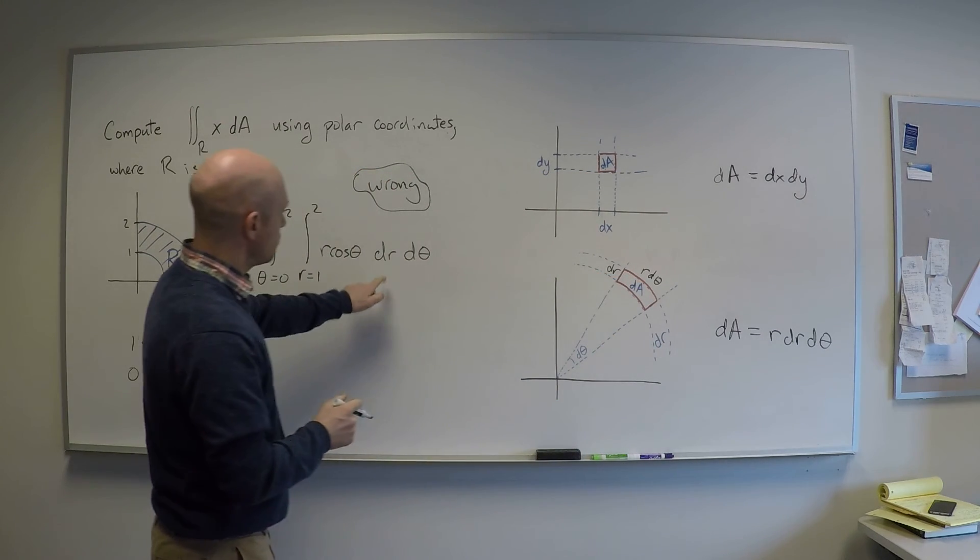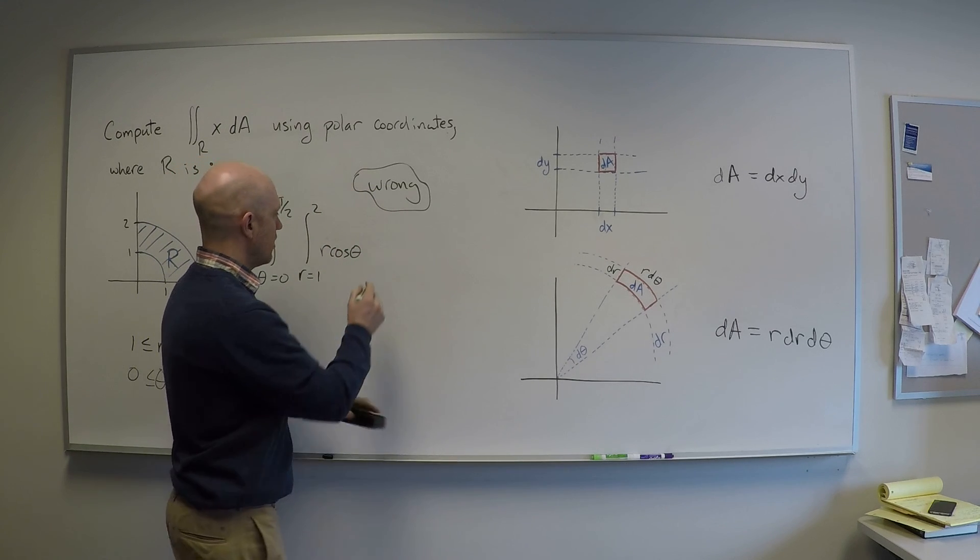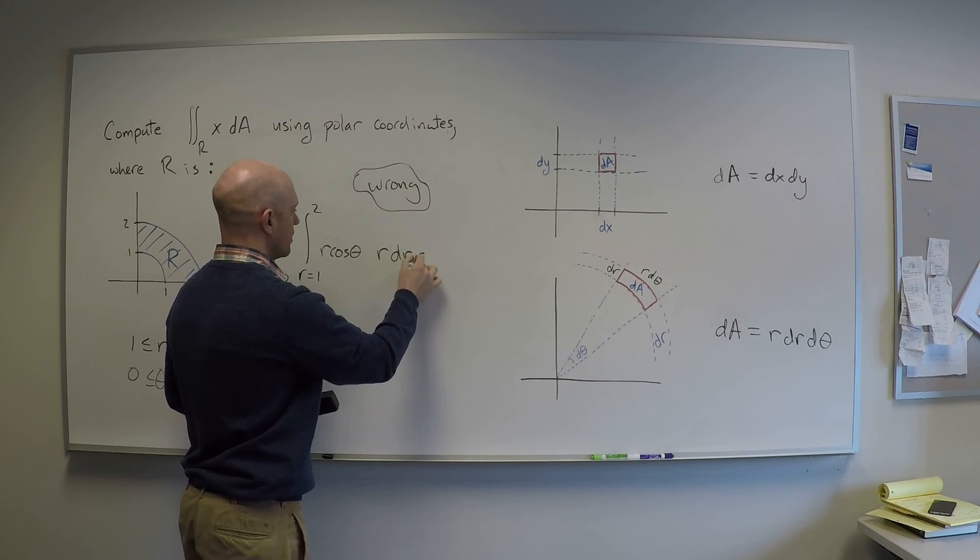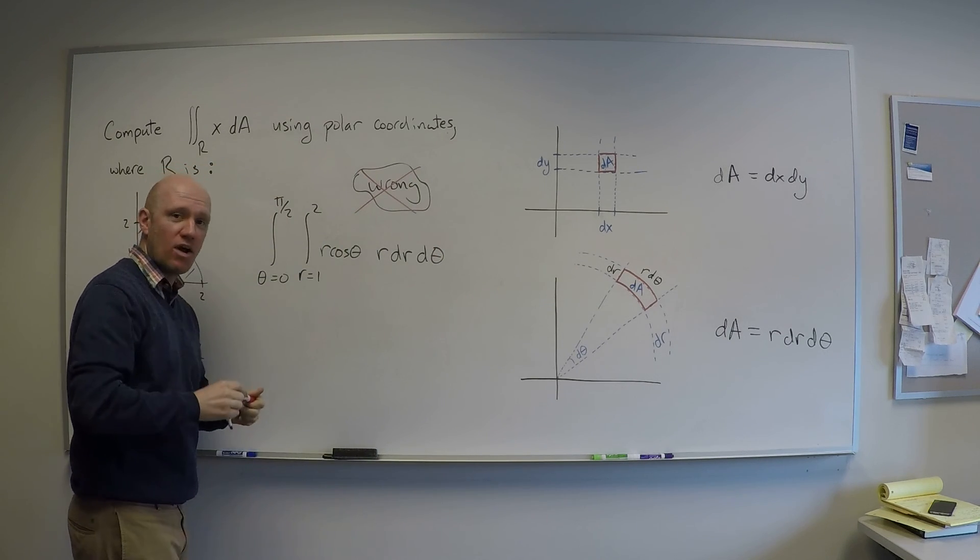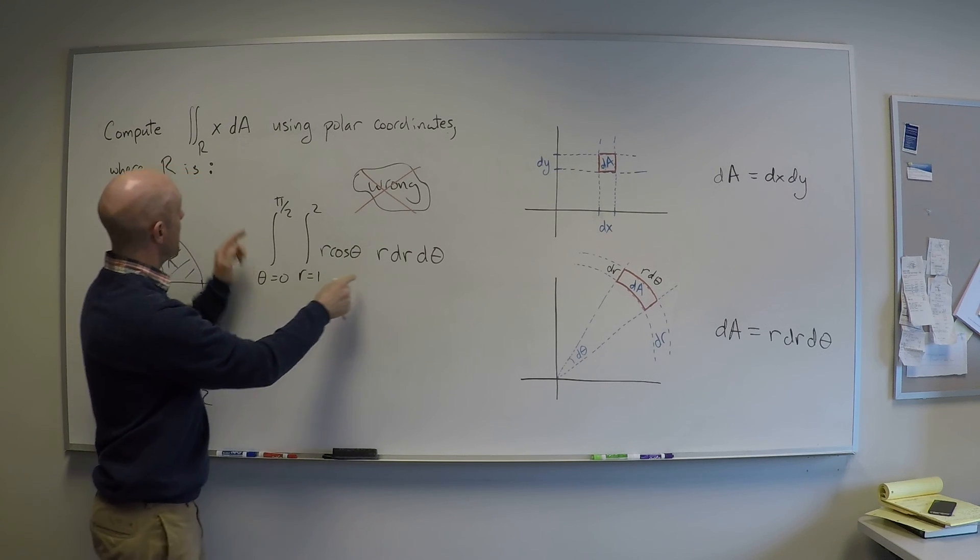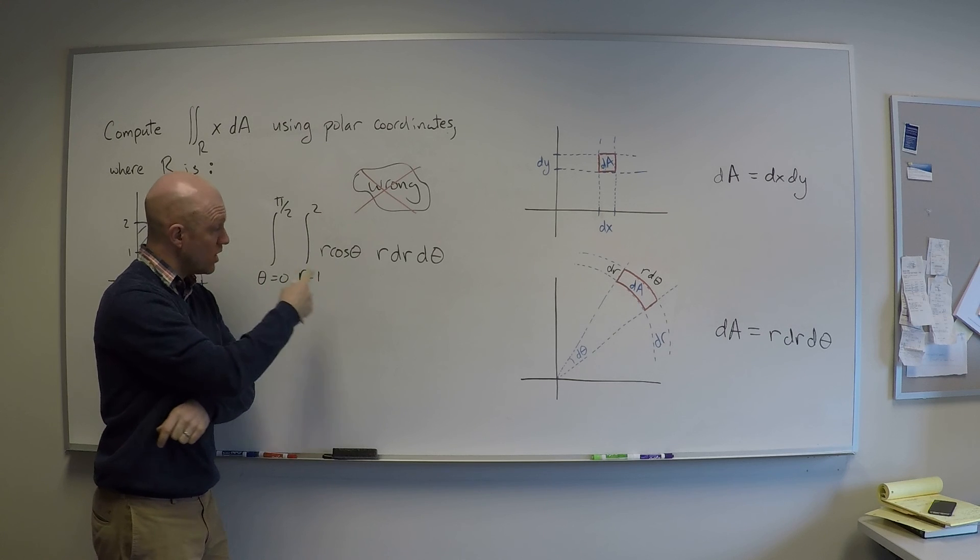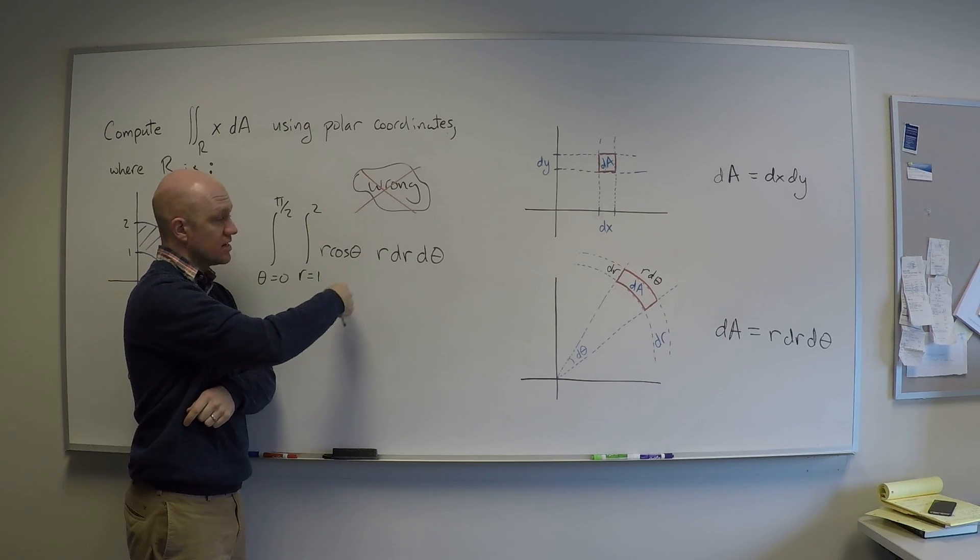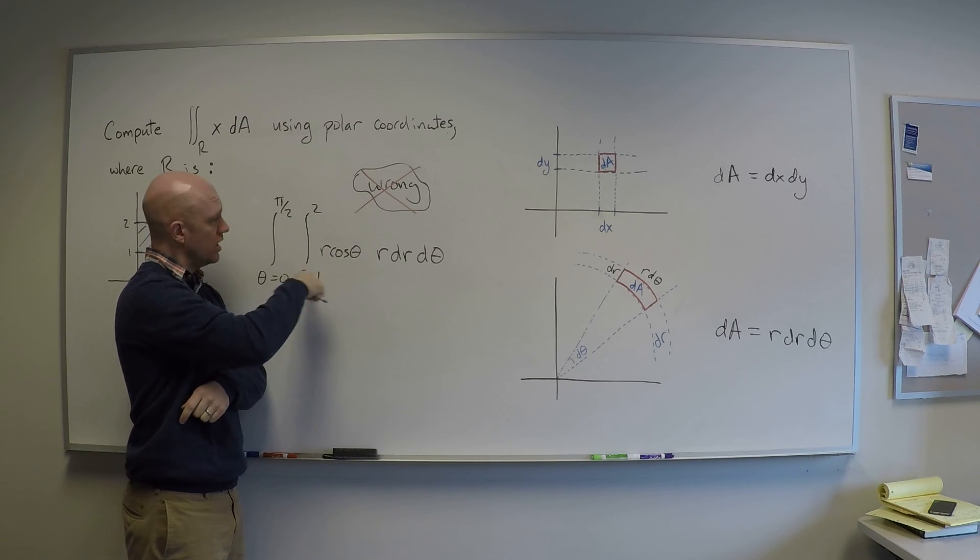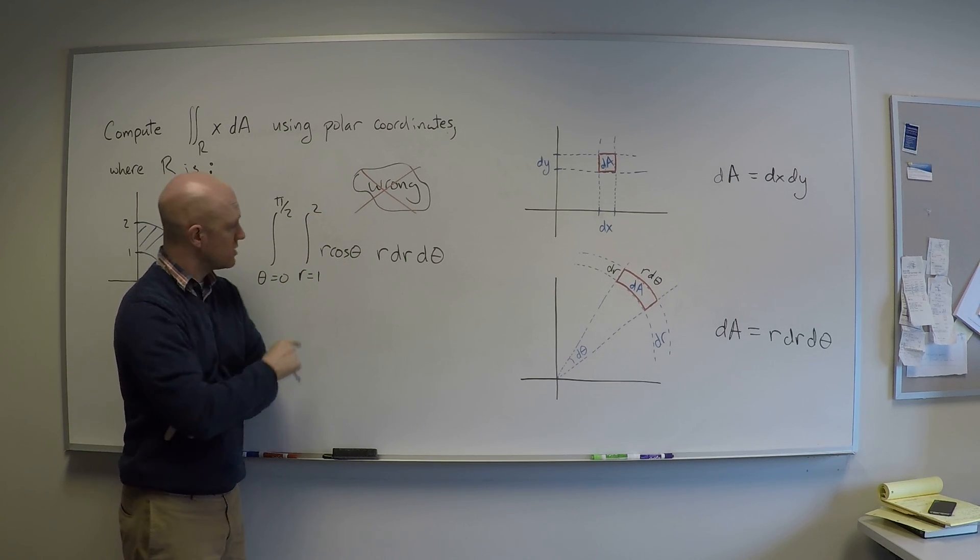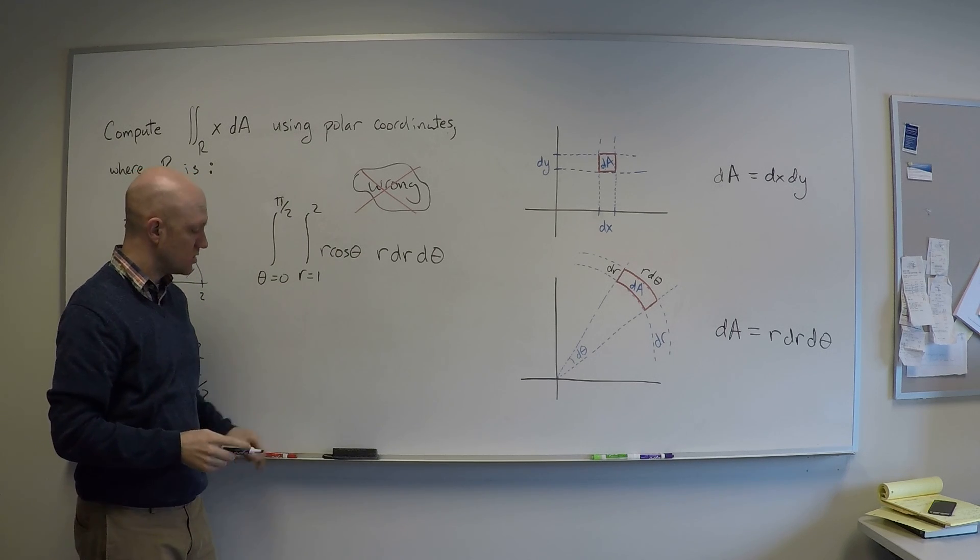So that's what would fix this. Get rid of this dr d theta and make it r dr d theta. Now I'm not wrong. I now write this is the way to evaluate this integral in polar coordinates. At this point it's a straightforward exercise in taking antiderivatives with respect to r, evaluating them from 2 minus 1, and then antiderivatives with respect to theta, evaluating them at pi over 2, and subtracting the evaluation at 0.